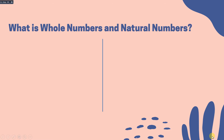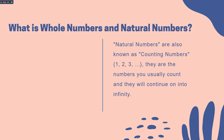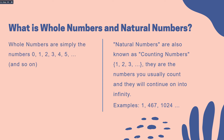First, we have to differentiate and identify whole numbers and natural numbers. Natural numbers are also known as counting numbers, meaning they include 1, 2, 3, up to infinity — these are the numbers you usually count. Examples of natural numbers are 1, 427, and 1064. Whole numbers are the simple numbers which include all natural numbers plus 0.